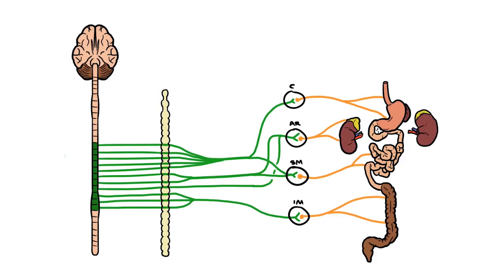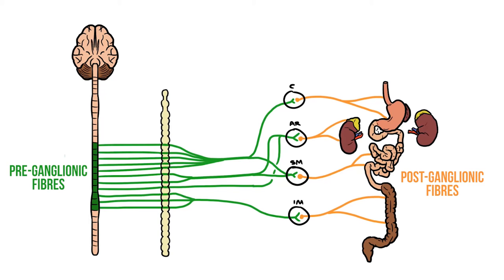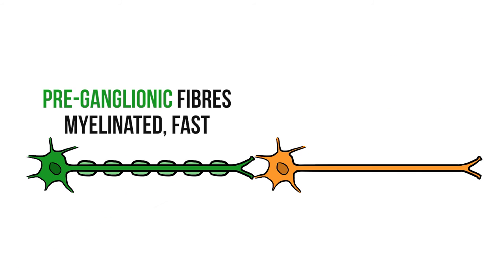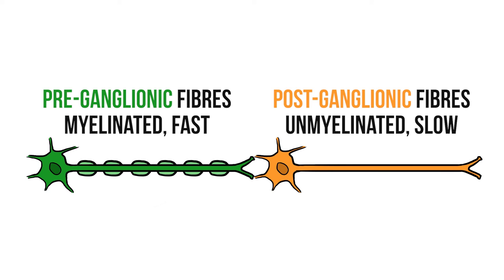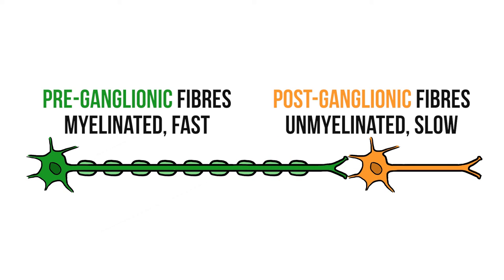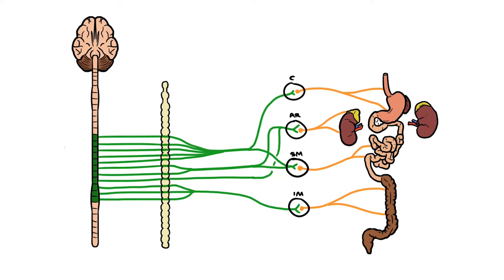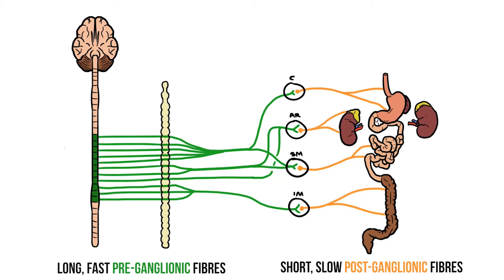The other question you might have is: why do all this? What possible benefit is there for synapsing next to the organs instead of in the sympathetic chain? To understand this we need to look at the differences between our pre- and postganglionic fibres. Preganglionic fibres are myelinated, allowing them to send nervous impulses much more quickly than the unmyelinated postganglionic fibres. If more of the nerve is formed by preganglionic fibres, that nerve will be quicker. By having their ganglia closer to the target organs, the majority of the splanchnic nerves are formed by those fast preganglionic fibres, allowing them to send nerve impulses much more quickly than the other sympathetic nerves.